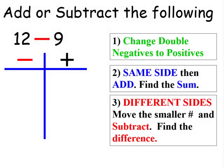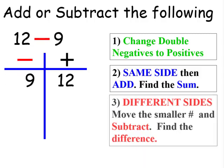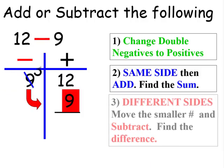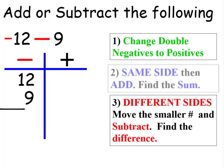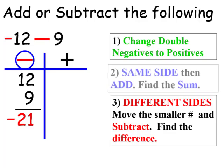12 minus 9: 12 is positive, 9 is negative. Therefore, we'll move the smaller number over and subtract. 12 minus 9 is 3. Since it's underneath the positive side, it stays positive. Negative 12 minus 9: since 12 is negative, it goes underneath the negative side. Since there's a minus sign in front of the 9, it also goes underneath the negative side. Since they're on the same side, we add. 12 plus 9 is 21. Since it's underneath the negative side, the answer is negative 21.